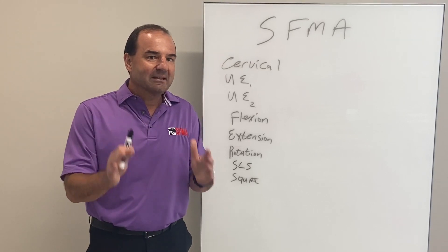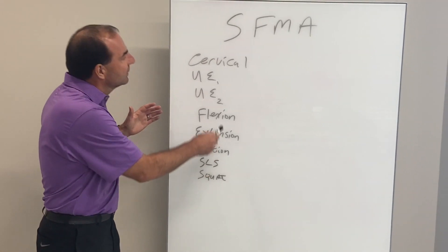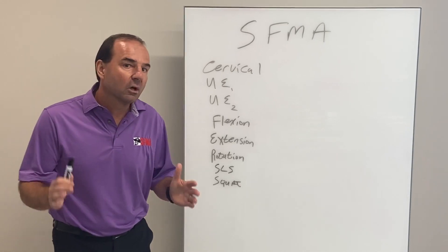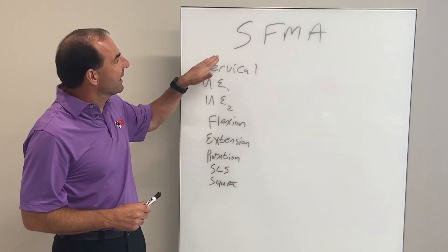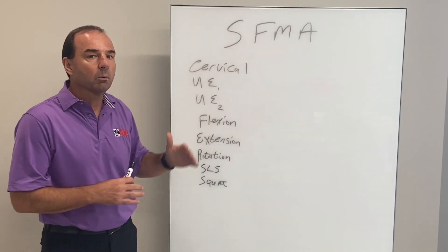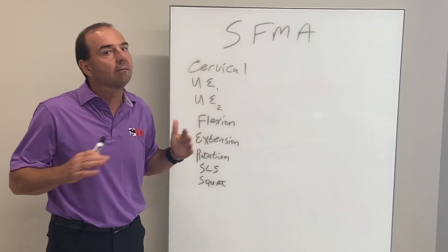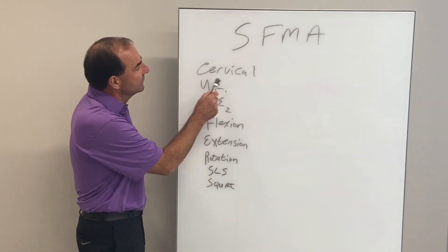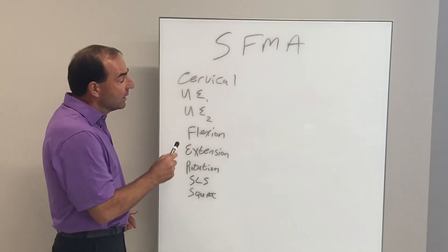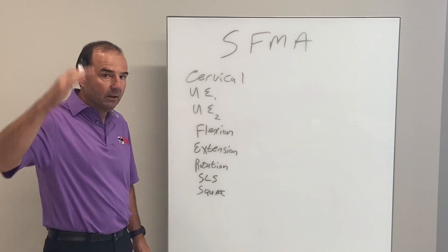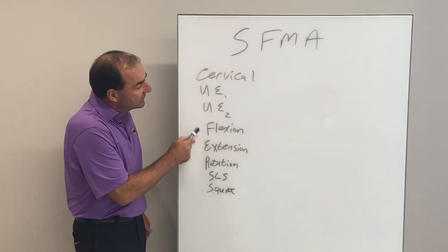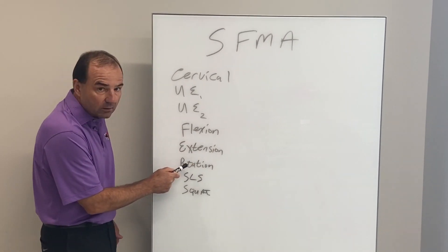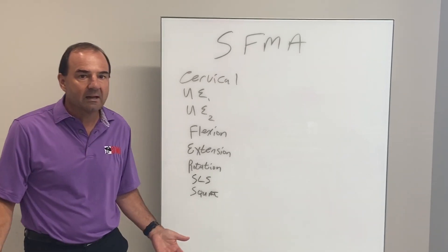What I want to focus on in this segment is the relationship of these top-tier movements and a real focus on what we call multi-segmental flexion, or that toe touch pattern. When we talk about the Selective Functional Movement Assessment, we're looking at a lot of different movements — but selective. We're not catching every bit of hand and wrist or the TMJ. But we are looking at cervical patterns through multiple planes, upper extremity patterns both behind your back and over your head, a composite toe touch, a composite backwards bend extension, a composite rotation, and then single leg balance on one side and the other, and then a squat.